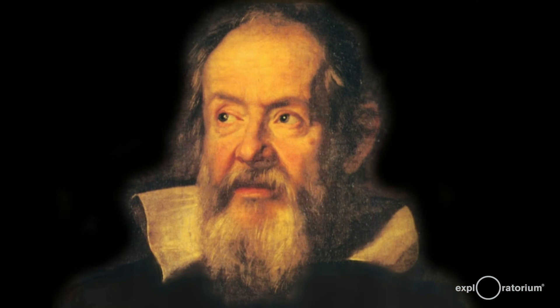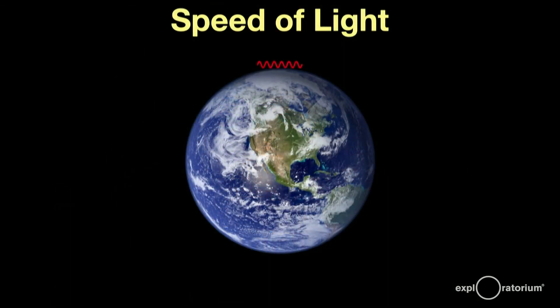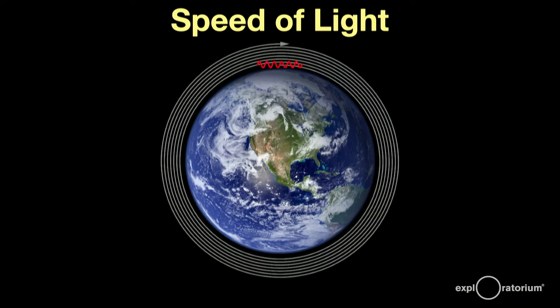He had no idea how fast light traveled, or that his experiment was doomed to failure only because he lacked the technology. Galileo concluded that the speed of light was, if not instantaneous, it is extraordinarily rapid, and that's a valid scientific statement. Galileo failed because the speed of light is so unbelievably fast.